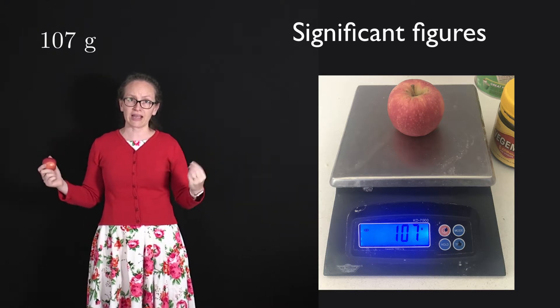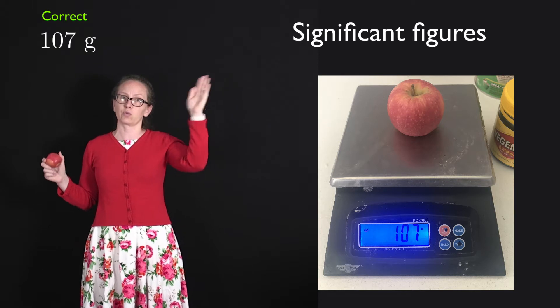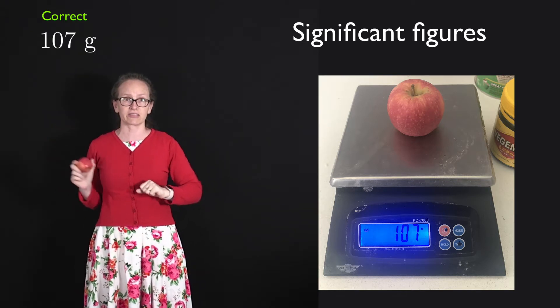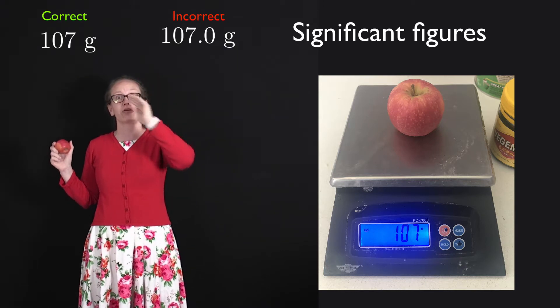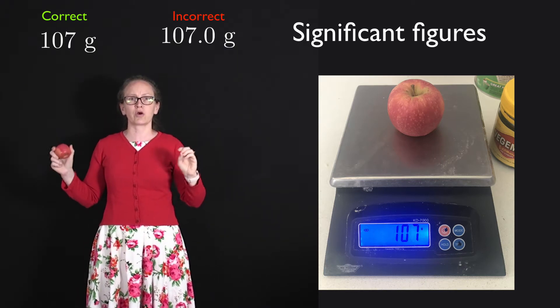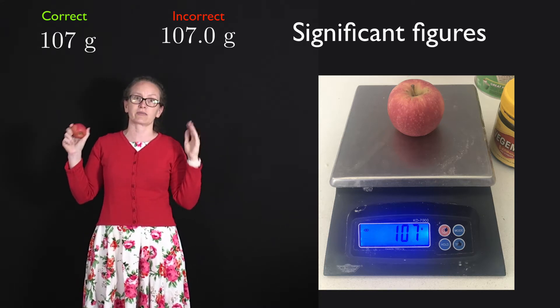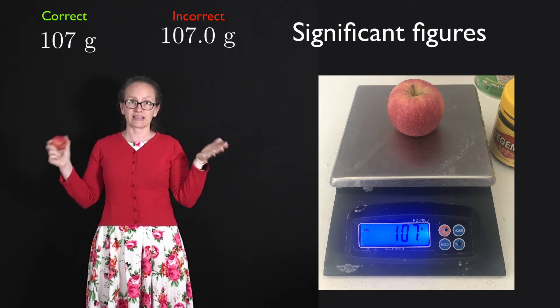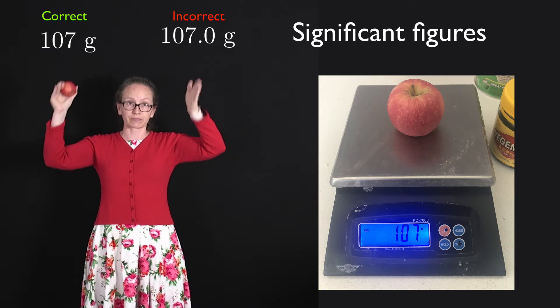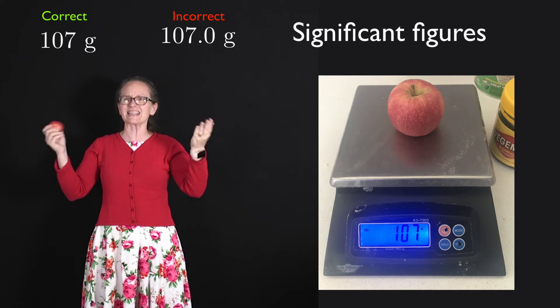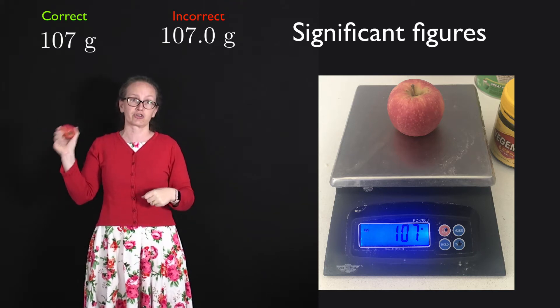Now it is correct for me to write this down as 107 grams. It would actually be incorrect for me to write it down as 107.0 grams because that would signal that I knew the mass of the apple to the nearest 0.1 gram and that it was exactly within that precision 107.0 grams, which isn't something that I can claim because I just don't know that.